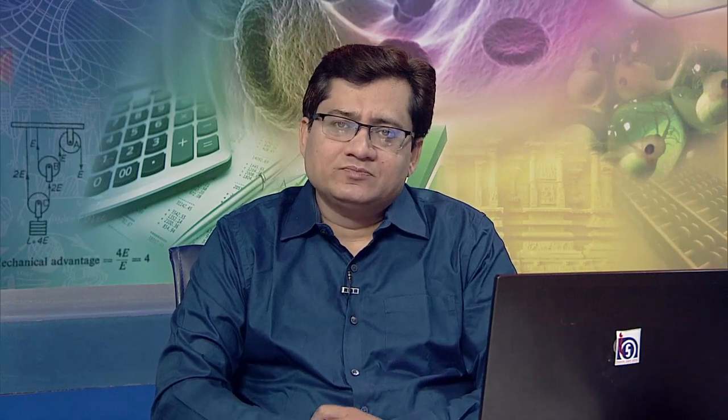Now, steps of the scientific method. The first step is the problem. First of all, what does the learner desire to learn? What is the intention of that learner? Is there any motivation level for that? We need to gauge that. So there is a problem in that.